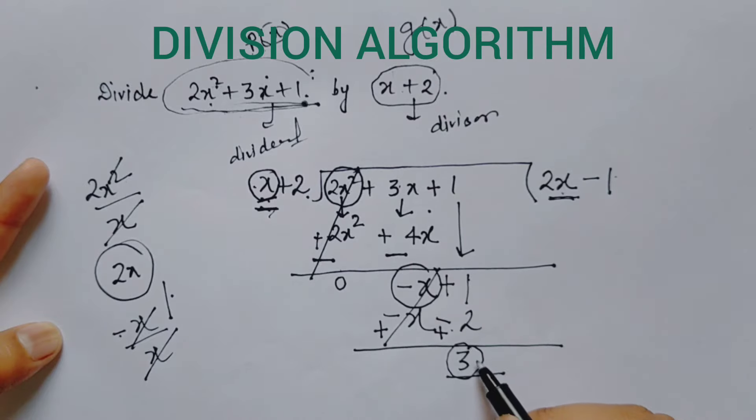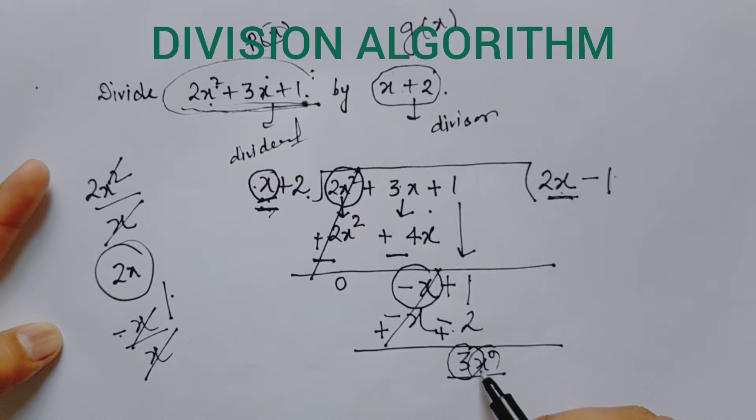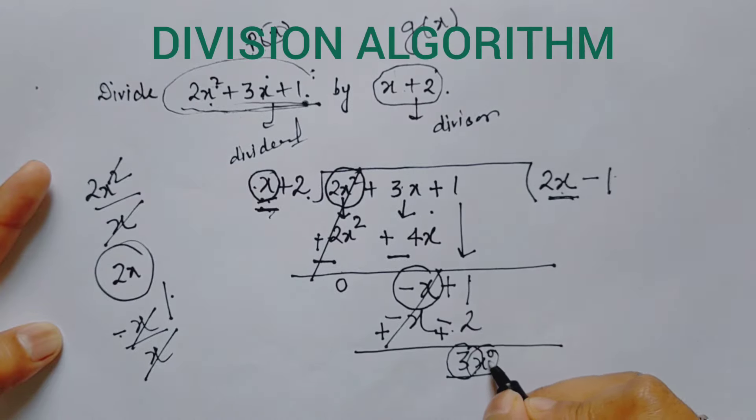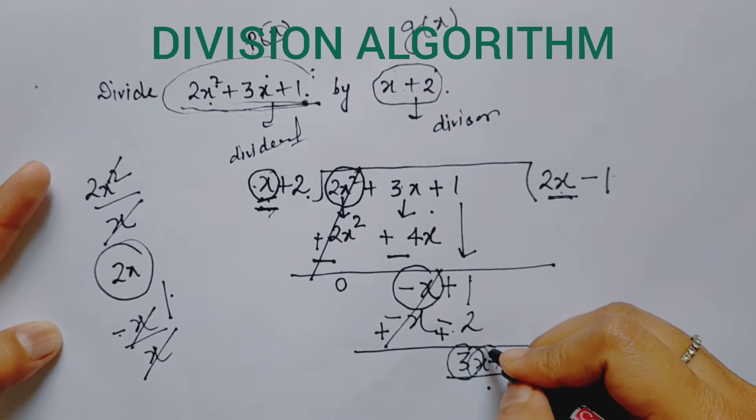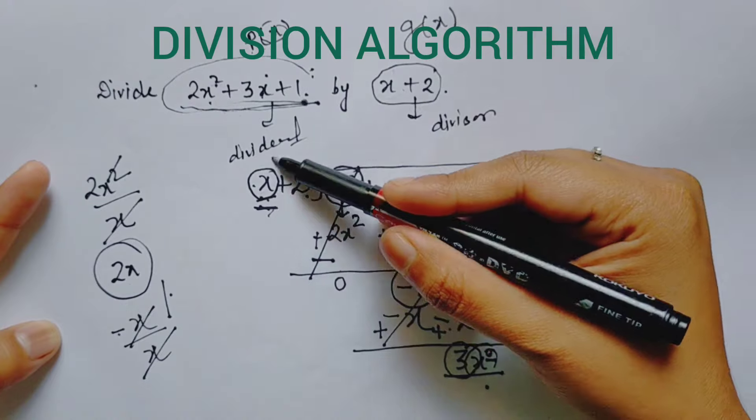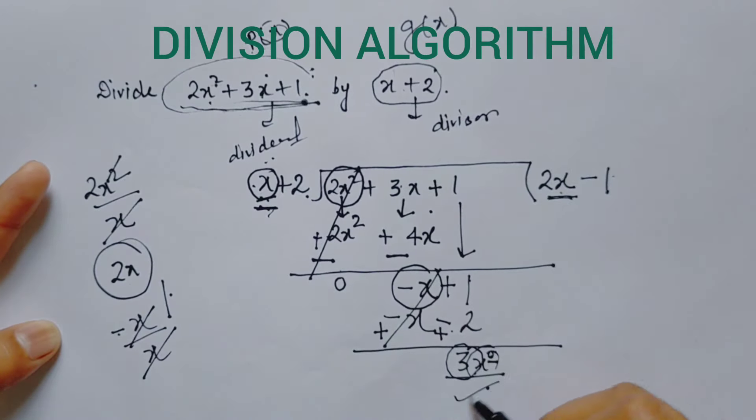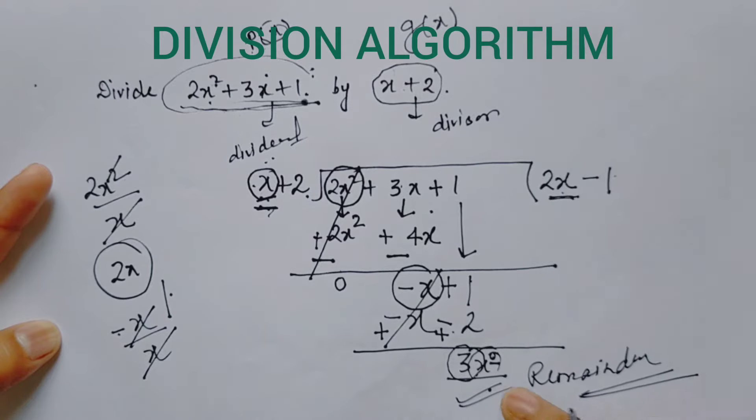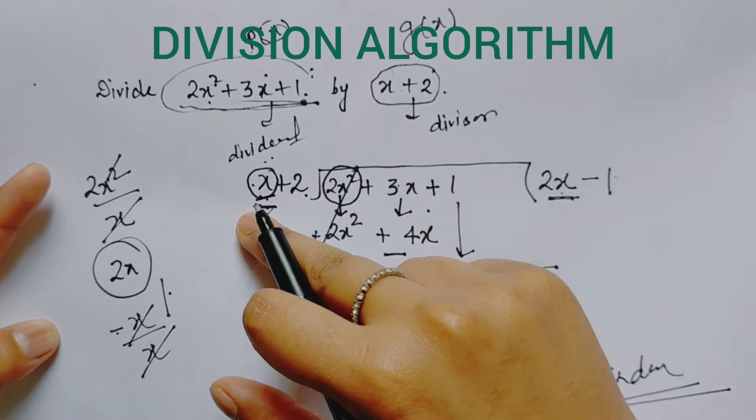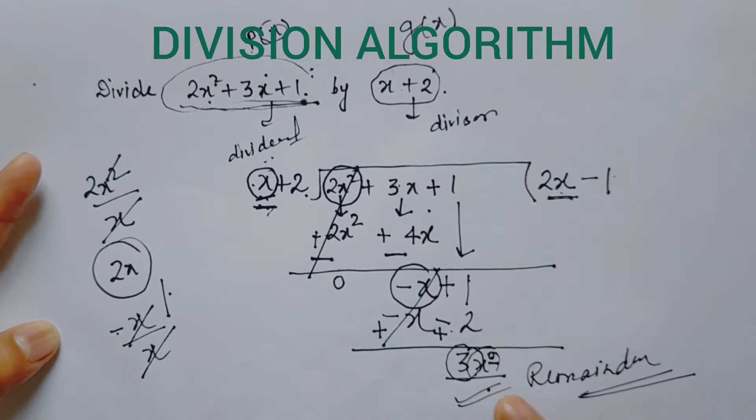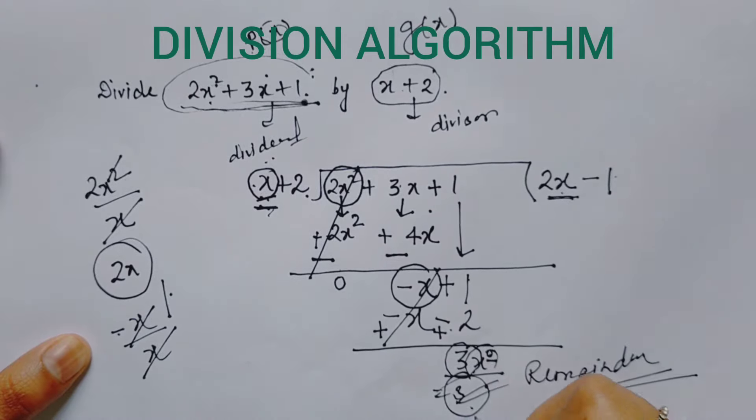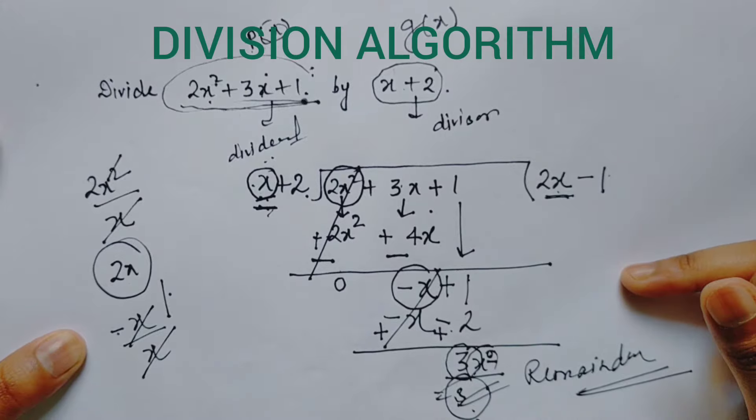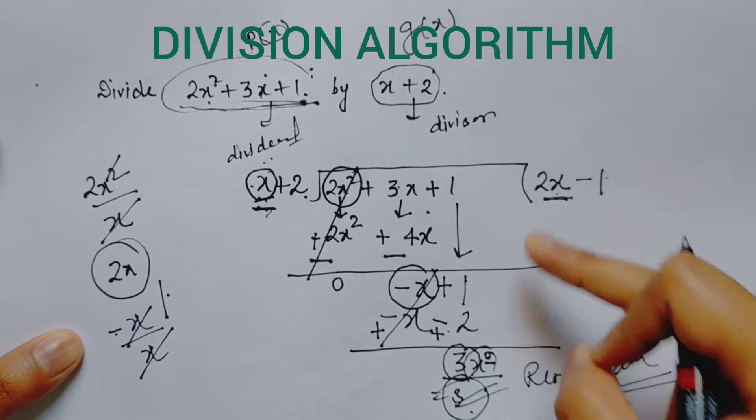It will be cancelled, and 2 plus 1 gives 3. Now see the degree of this polynomial: x to the power 0 is there, meaning 1. The remainder has degree 0 while the divisor has degree 1, and 0 is less than 1, so this is our remainder. 3x to the power 0 means 3 was my remainder.